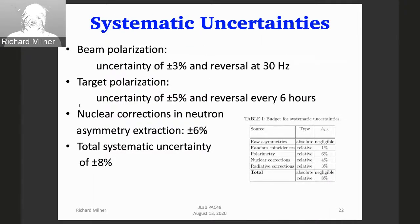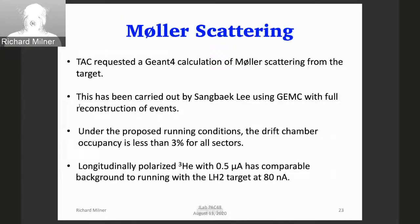Turning to experimental systematic uncertainties: beam polarization is known rather well and can be reversed quickly. Target polarization based on previous running at Bates has an uncertainty of plus or minus 5%, and reversal every six hours seems reasonable. The errors are of order 8% in the extracted asymmetries. The technical review requested a GEANT4 calculation of Møller scattering, carried out by student Sangbeok Lee using the full CLAS Monte Carlo and full reconstruction. The conclusion is that drift chamber occupancy is less than 3% for all sectors. Longitudinally polarized helium-3 with half a microamp has comparable Møller background to running with liquid hydrogen.